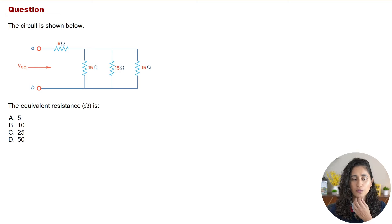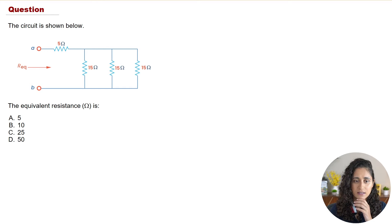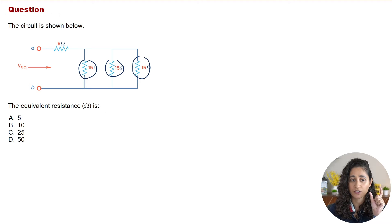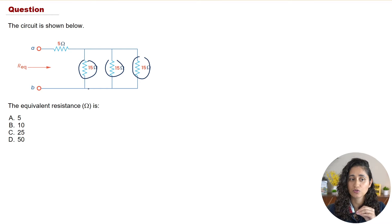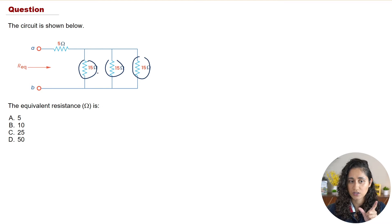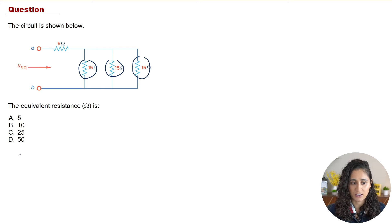The first thing we're going to do is determine which resistors are in parallel and which are in series. As you can see, these three resistors are in parallel, and we're going to find the equivalent resistance for them. That resulting resistor is then going to be in series with the 5-ohm resistor.